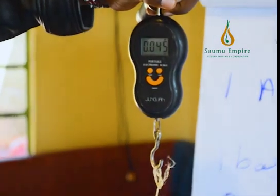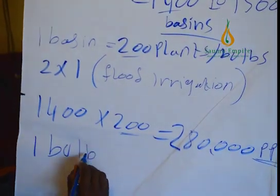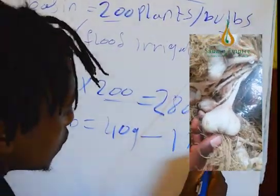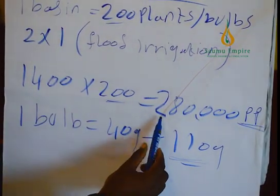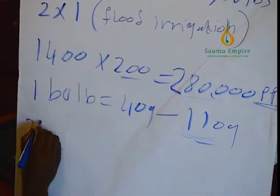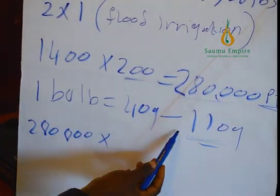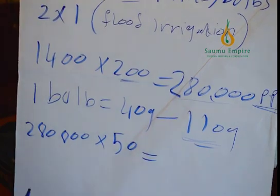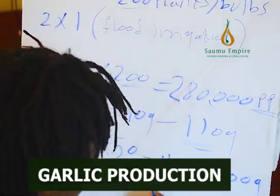This is grade two, weighing 45 grams. One bulb ranges from 40 grams to 110 grams. Taking an average of 50 grams, 280,000 plants times 50 grams gives us 14 million grams per acre.